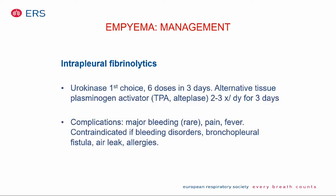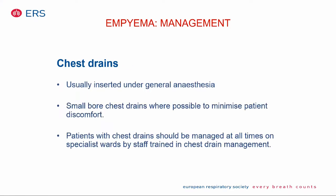If you use fibrinolytics, urokinase is the first choice — recommended for three days twice per day. Alternatively, alteplase can be given two to three times a day for three days. There are very few complications: major bleeding is extremely rare, allergies have not been described in children, but children can have pain and fever. Fibrinolytics are contraindicated if there is a bleeding disorder or a bronchopleural fistula. Chest drains are usually inserted under general anaesthesia; smaller chest drains are preferred because they make it easier to mobilize the patient, but then fibrinolytics should be used to prevent clotting in the drain. It is very important that you need experienced staff at your department to handle patients with a chest drain.